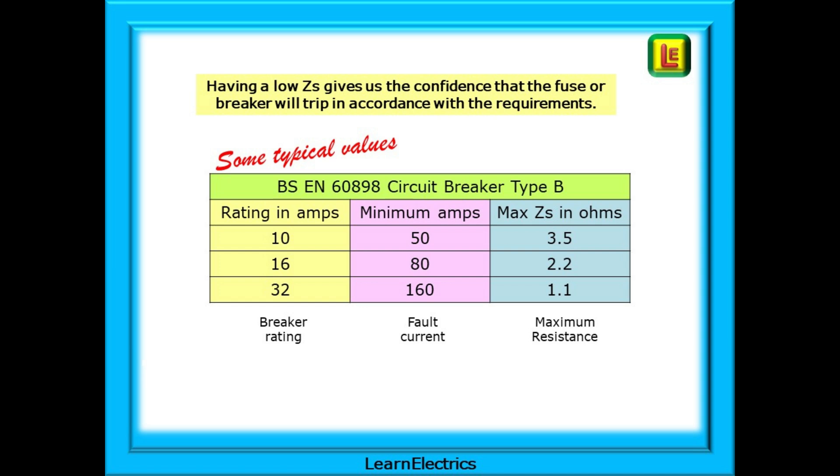Here, we've just chosen three different Type-B breakers to show the different amounts of fault current required to make them trip as required. Notice that the smaller the breaker rating, the bigger the ZS that is allowed. Smaller breaker sizes have a bigger allowable ZS for the circuit.